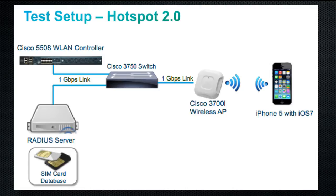For the test setup, we have one Cisco 3700 802.11ac-capable access point connected to a Cisco 5508 Wireless LAN Controller running the latest 7.6 code. For SIM authentication, we will be using a RADIUS server which holds all the client SIM card information.